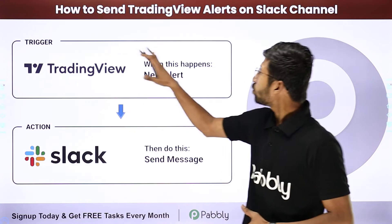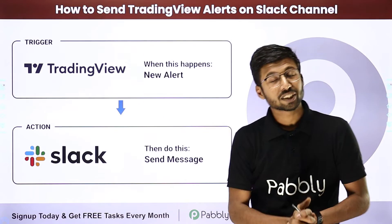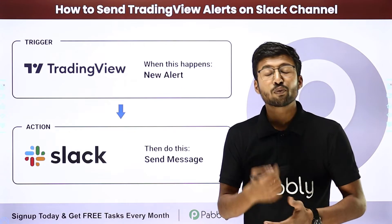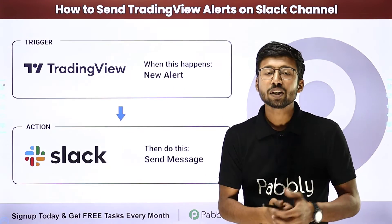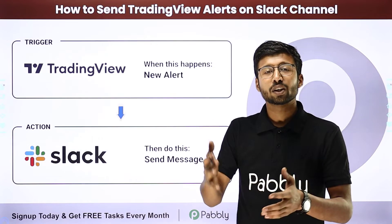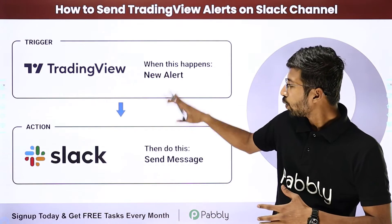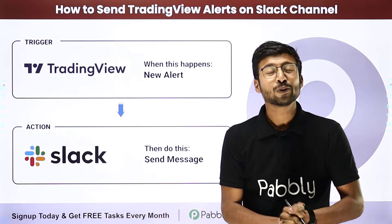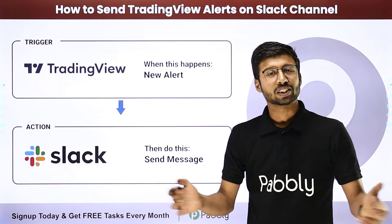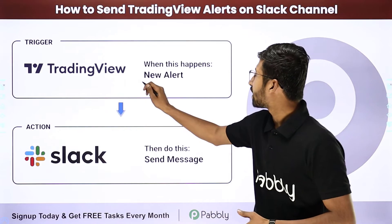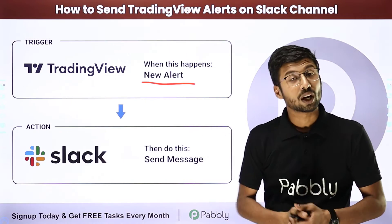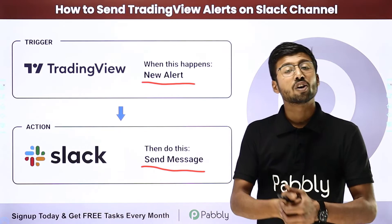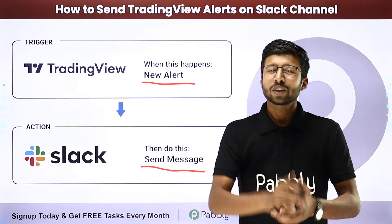In this video we will learn how to send trading view alerts to a Slack channel. Suppose you have created some alerts in TradingView for your goals, and whenever your favorite stocks or index reach that point, you want to send the details of that alert to your Slack channel as a channel message. You can completely automate this process — the trigger will be getting an alert on your TradingView account, and the action will be sending those alert details as a channel message on a Slack channel.